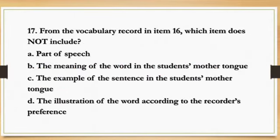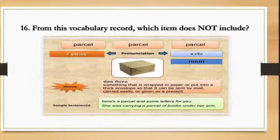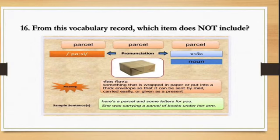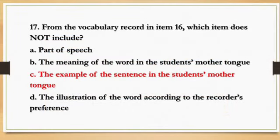Number 17. From the same vocabulary record, which item does not include? A. Part of speech. B. The meaning of the word in the student's mother tongue. C. The example of the sentence in the student's mother tongue. D. The illustration of the word according to the recorder's preference. The correct answer is C — the example sentence in the student's mother tongue is not included in the vocabulary record.